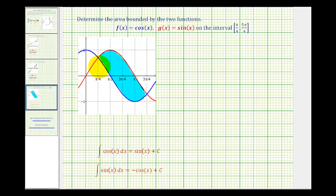So we can see from the graph, the x-coordinate of this point of intersection is pi over four and the x-coordinate of this point of intersection is five pi over four. So these will be our limits of integration.